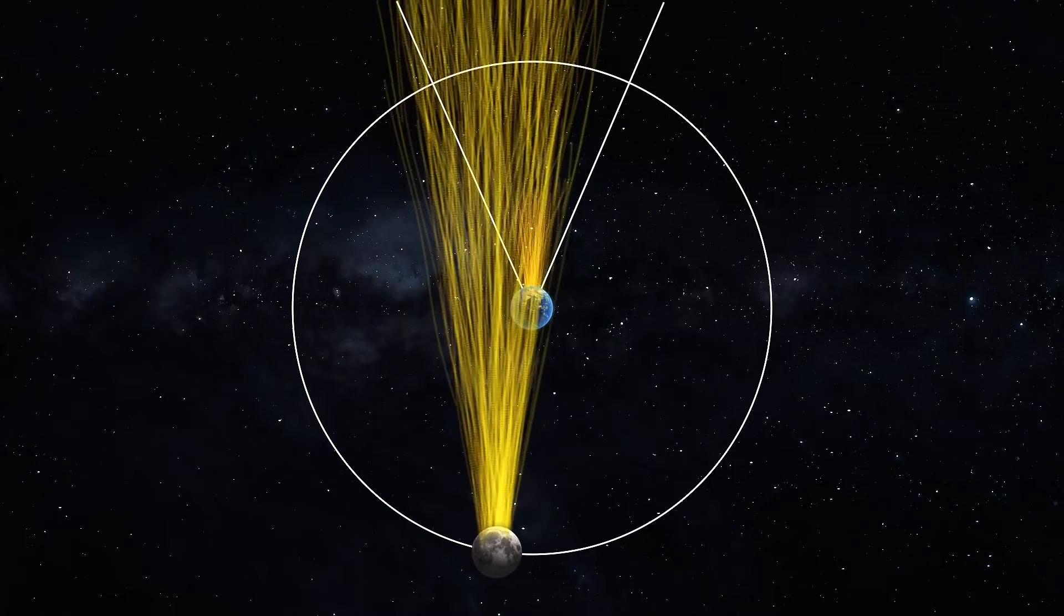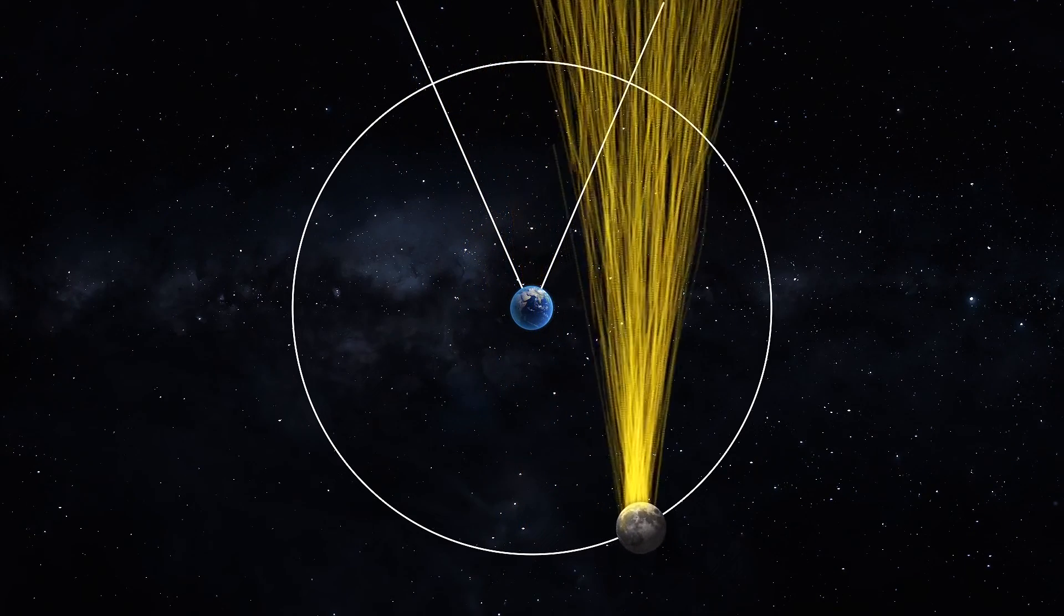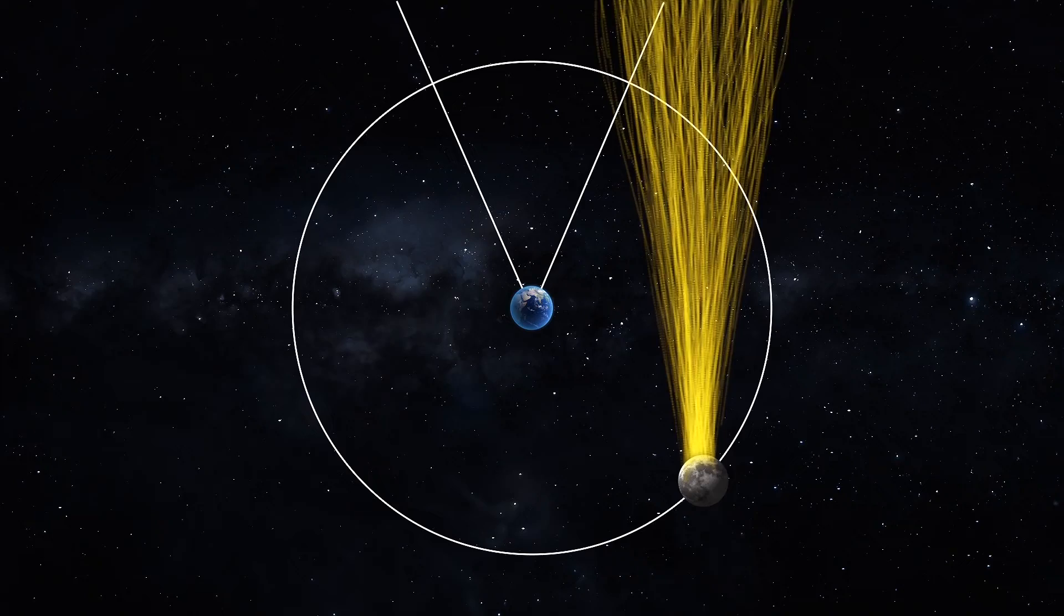This means Earth periodically passes through the tail. When this happens, Earth's gravity focuses the tail into a beam that wraps around the planet and shoots out behind it.